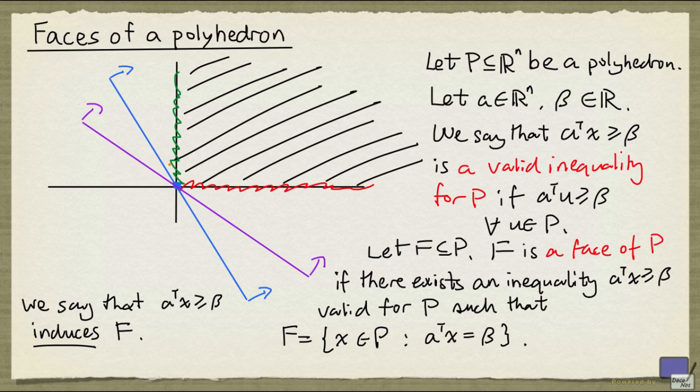So if we go back to this example here, the red part is a face and is induced by the inequality that says X₂ greater than or equal to 0. Here the axes are X₁ and X₂. And the green part is a face induced by the inequality X₁ greater than or equal to 0. Whereas the face corresponding to this extreme point in blue is induced by infinitely many inequalities.